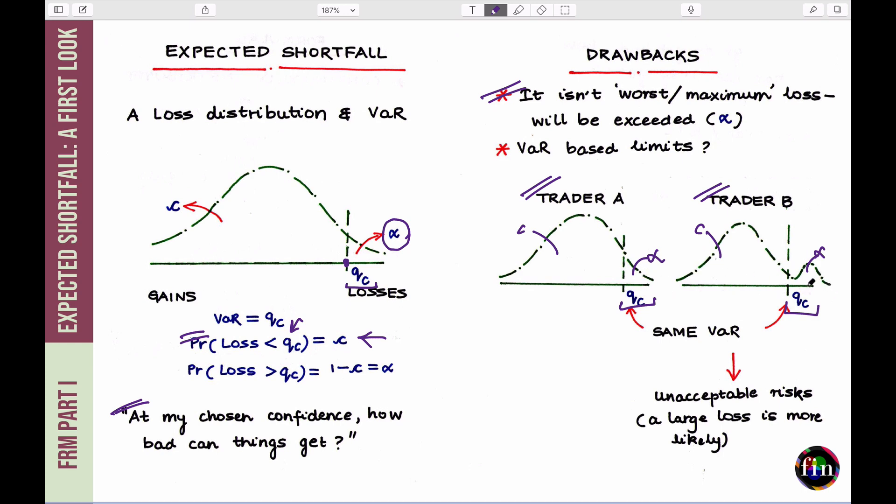This can happen, for example, if trader B is taking positions like writing out of the money puts, and he's therefore collecting premiums with this small tiny chance that the market will plunge, and all these puts will land up in the money, and the bank will have to pay that payoff to the buyer of those puts. The trader B might have been, for example, buying very default risky bonds. So, there is a high chance that the bonds will deliver, they will pay the promised payoff, and there is a small chance that the bonds will not pay you anything.